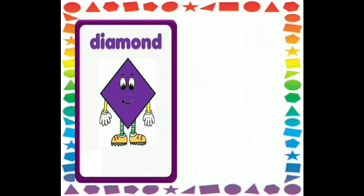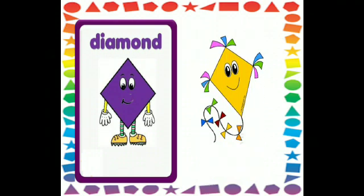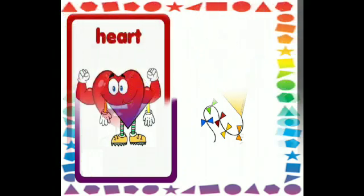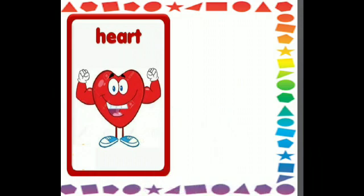It's a diamond shape, and it has four sides. The kite flying in the air that you see is of diamond shape.